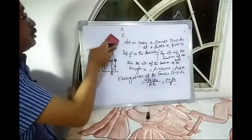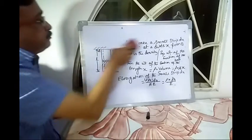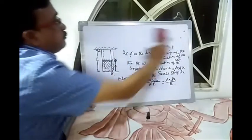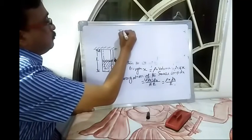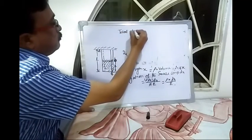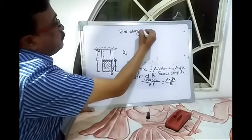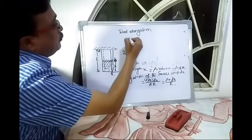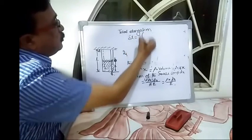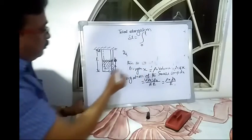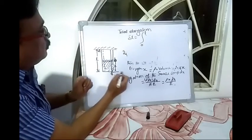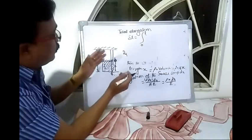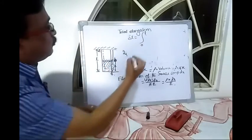So the total elongation delta L is equal to the integration from 0 to L. If we integrate from 0 to L, then we get the total elongation due to the self-weight of the body.